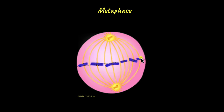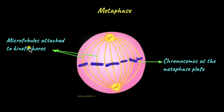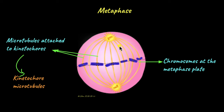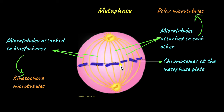Metaphase is characterized by the arrangement of chromosomes at the metaphase plate, which is an imaginary plate at the center of the cell. This is important for the proper splitting of the sister chromatids and the splitting of the cell. There are two types of microtubules: kinetochore microtubules, which are attached to sister chromatids, and polar microtubules, which radiate from one end and attach to microtubules emerging from the other end. Understanding the function of each type requires looking at the next phase of mitosis.